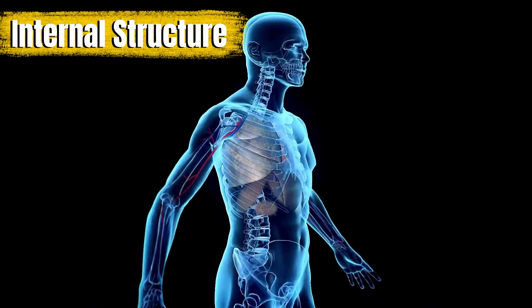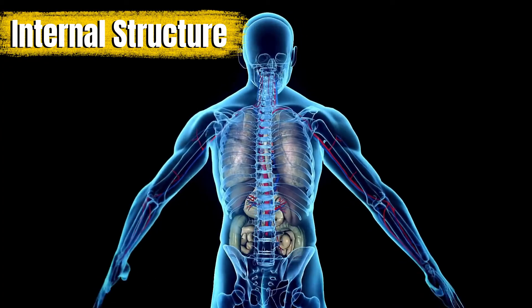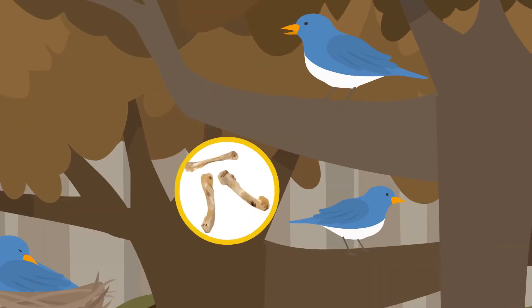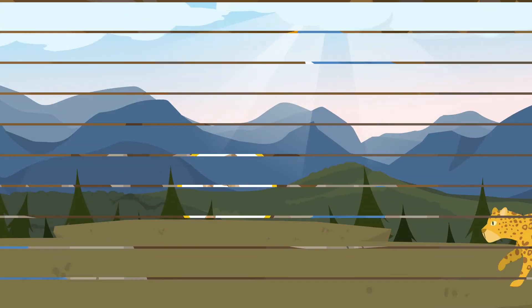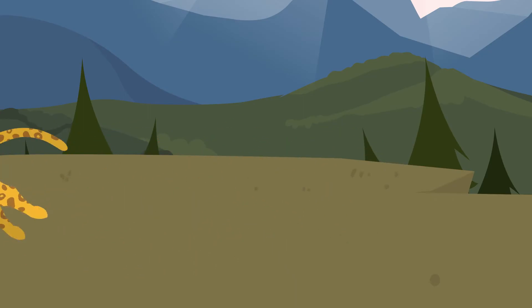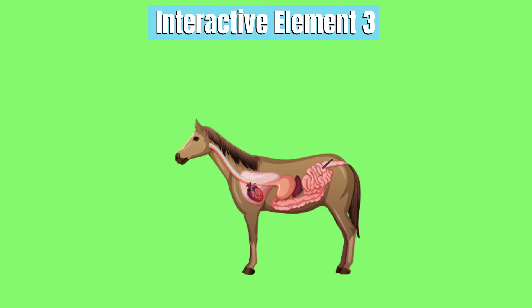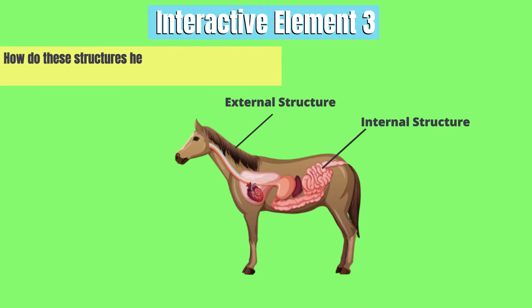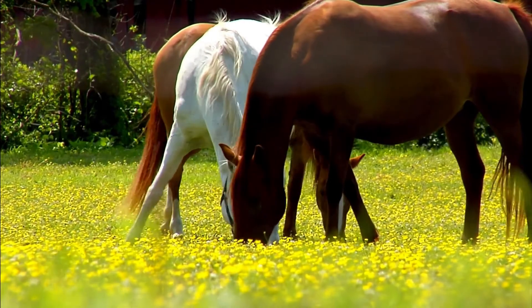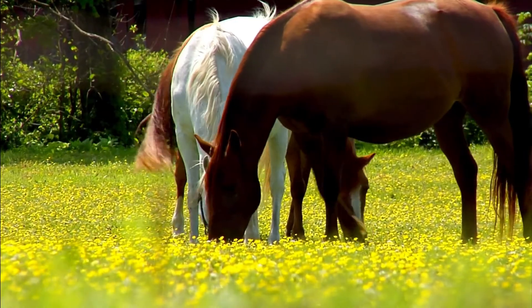Internal structures are inside the body and often play critical roles in survival. For example, the hollow bones of birds make them lighter, aiding in flight, and the powerful muscles of a cheetah's legs enable it to sprint at high speeds. Interactive element 3: Pick an animal and think about its internal and external structures. How do these structures help the animal survive in its environment? Write down your thoughts, focusing on both visible features and internal functions that contribute to its success.